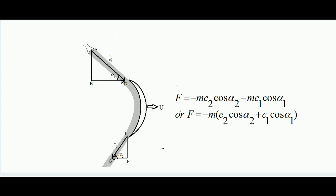Suppose steam is coming out with velocity c1. Here c1 is also called the absolute velocity at inlet, because the velocity c1 is with respect to the stationary nozzle. So c1 is the absolute velocity of steam at inlet, represented by vector ad. Similarly, at the exit, c2 is the absolute velocity of steam at outlet — again c2 is with respect to the nozzle itself — represented by vector eg.